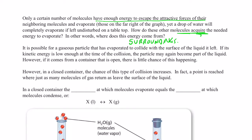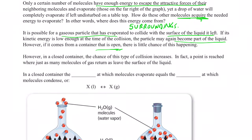It's possible for gaseous particles that have evaporated to again collide with the surface of the liquid they just left. If their kinetic energy is low enough, they may again become part of the liquid. However, if the container is open, there's little chance of that happening. When a water droplet evaporates from the surface of your body, those molecules are rarely going to return and condense again. On a very humid day, other water molecules might be returning to the surface and condensing, but it's not likely.